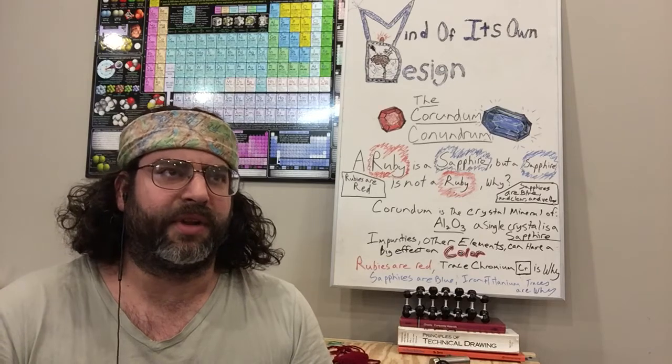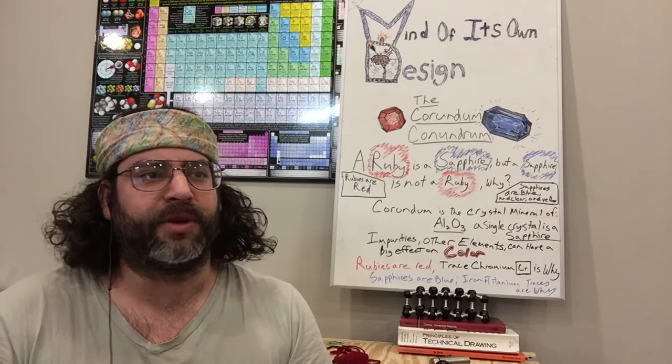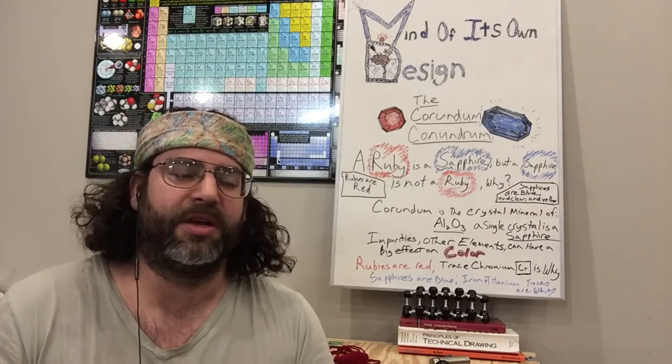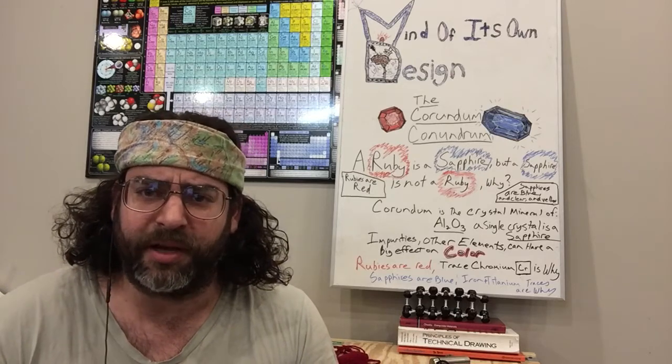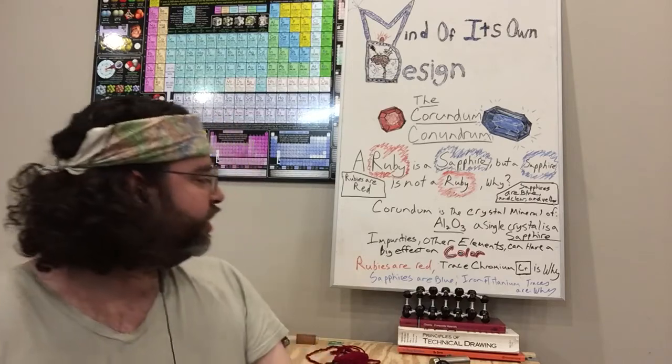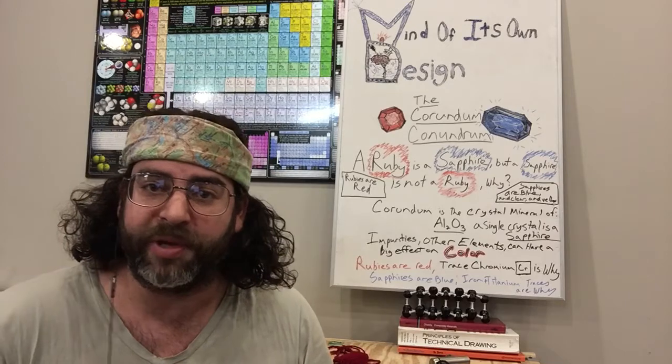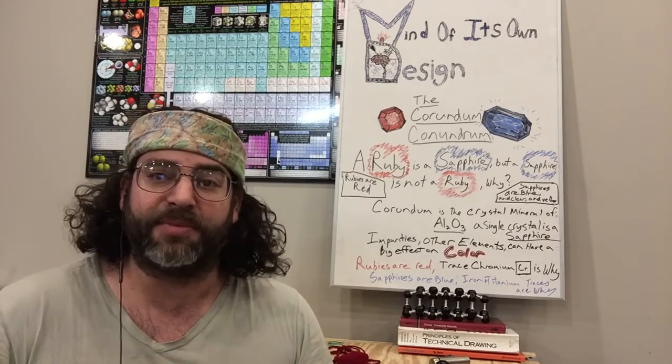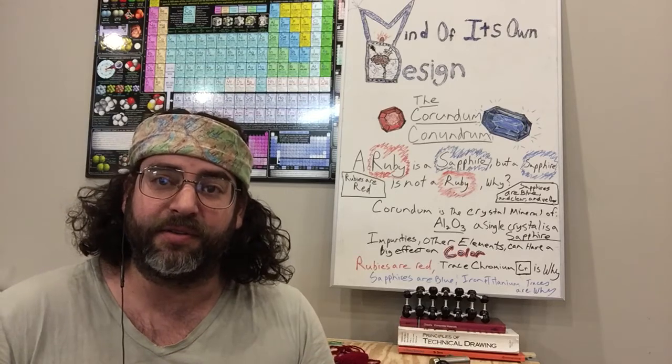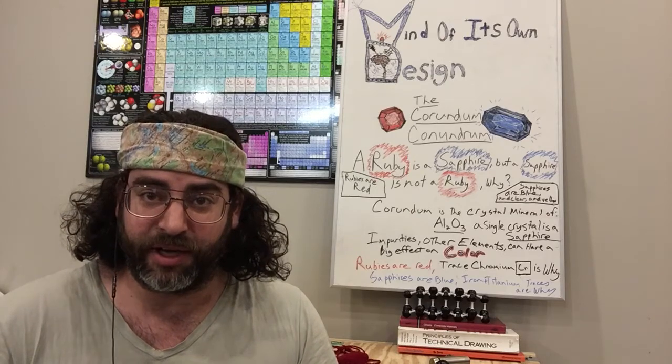But in a more abstract way, you actually can get effects from missing atoms. So in order to have everything be charge balanced, there might be an aluminum missing, or you might have an iron, or titanium, or chromium atom extra. But sometimes you have atoms missing. And in the case of the blue sapphires, that missing atom can actually have an effect on the color as well.